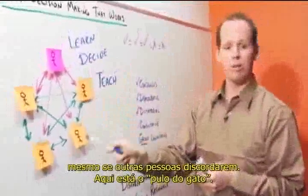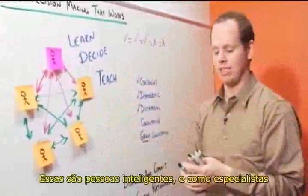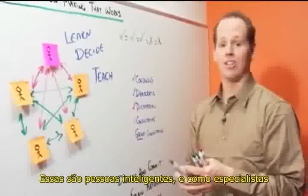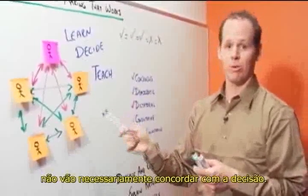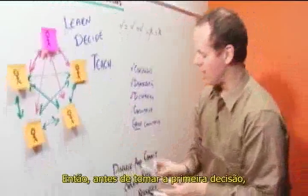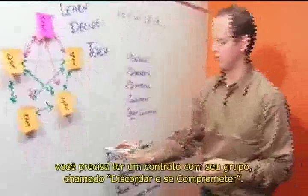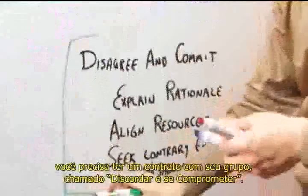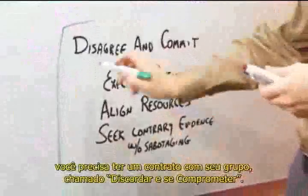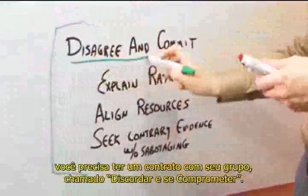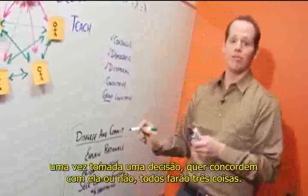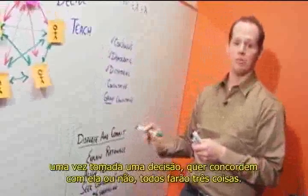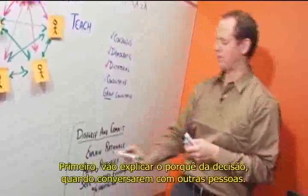Now here's the trick. These are smart people with expertise, and they're not going to necessarily agree with the decision. So before the first decision is made, you need to have a contract with your group called Disagree and Commit. Disagree and Commit means that everyone agrees that once a decision is made, whether or not they agree with it, they will do three things.